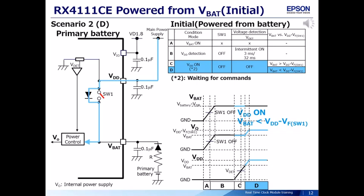Scenario 2, Case D: The main power is on, and in this condition, VDD minus VF for SW1 is more than VBAT. The power is supplied from the main power supply.